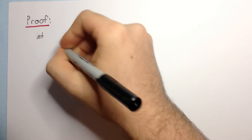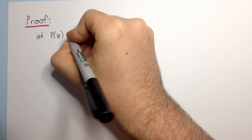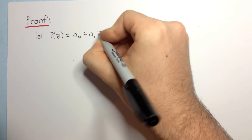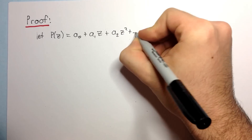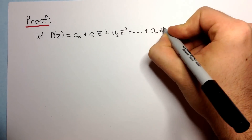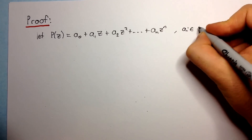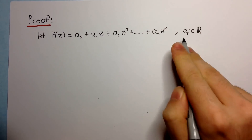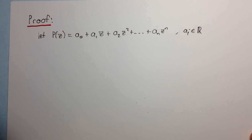Let P of Z equal A₀ plus A₁Z plus A₂Z squared and so on up to ANZ to the N, where all these coefficients are real. So the Aᵢ are real — that means A₁, A₂, AN — all these coefficients are real.